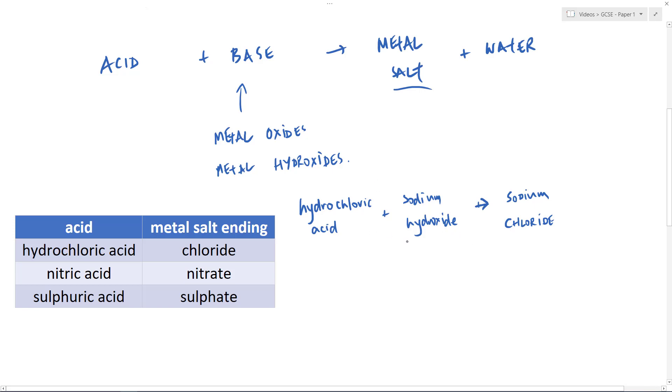So combining the metal of the metal hydroxide or the oxide, the base and the acid, the ending, we get sodium chloride in this case and then water because that's always produced when we have our acids reacting with either our bases of metal oxide or metal hydroxide.